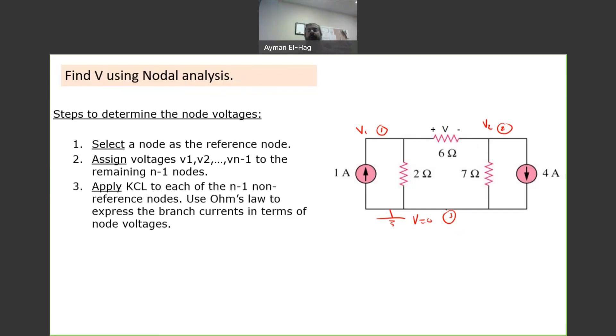Number three. We will apply KCL to each of those nodes. One and two. Not the reference. We don't touch the reference. How we apply KCL? KCL, as we know it, summation of currents at any node is equal to zero.